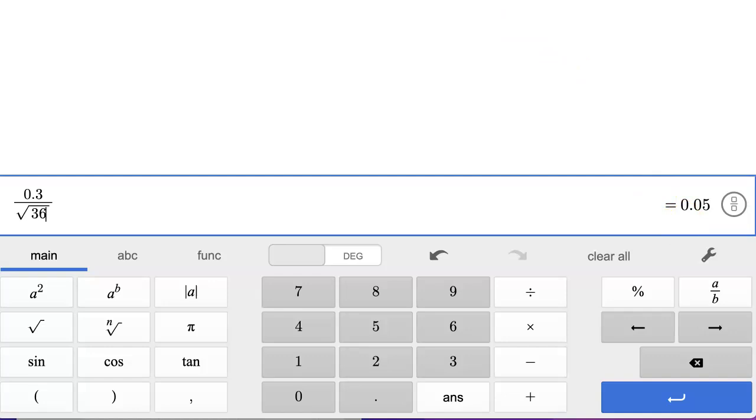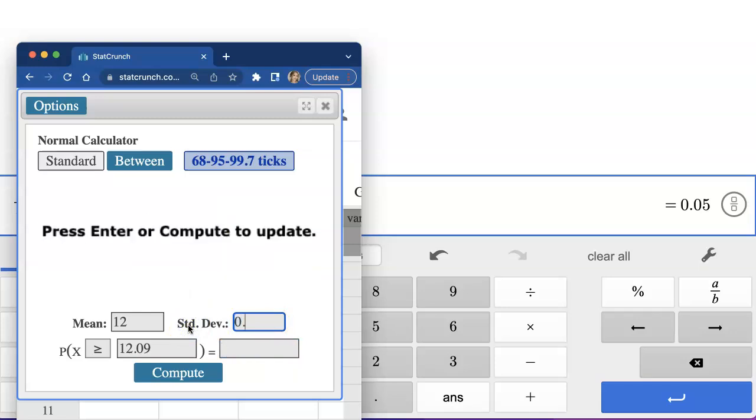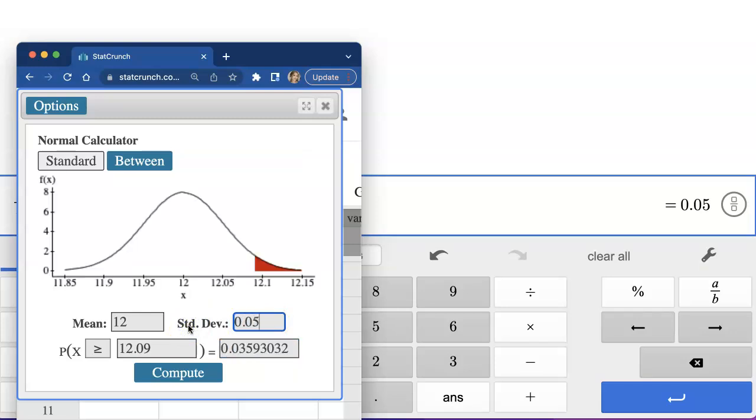Look, everything else in your StatCrunch calculator remains the same, but the standard error goes down from 0.3 to 0.05 and hit compute. This is going to be the answer. So there's a much lower chance that we're going to get a sample of 36 ice creams with their average weight coming up to be heavier than 12.9.